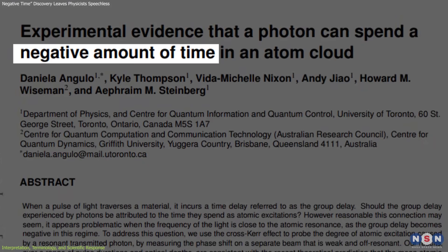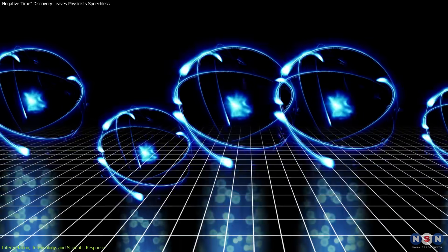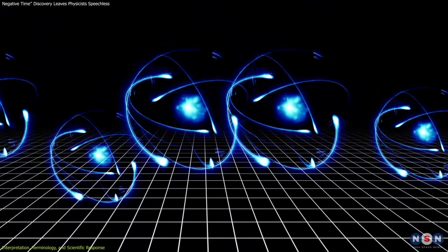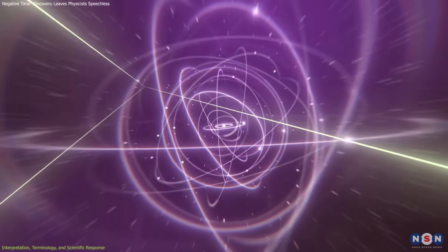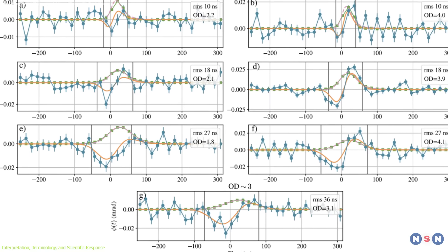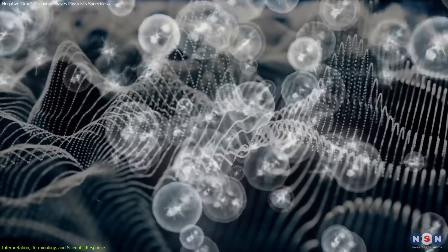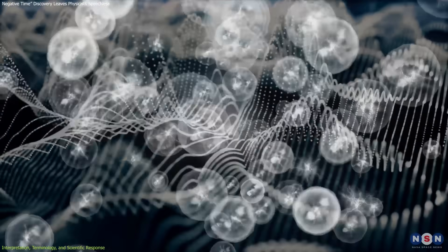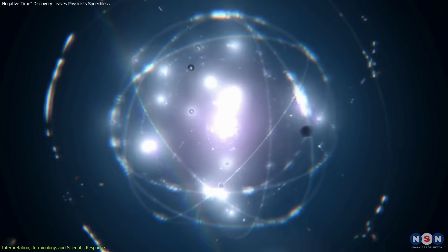In this case, Steinberg and Angulo argue that negative time is a shorthand for a valid quantum behavior that traditional terminology doesn't fully capture. Their data shows that under specific measurement techniques, the apparent time between input and output can flip signs. Not because time itself reverses, but because the probability distribution for the interaction includes values on both sides of zero. This result fits within the broader behavior of quantum systems.